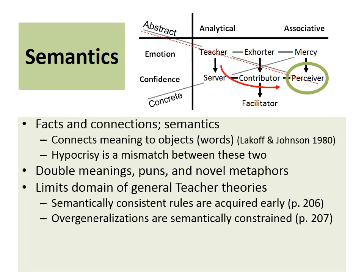Looking at grammar, Slobin said that semantically consistent rules are acquired early — rules that fit naturally and don't have hypocrisy, where there isn't a mismatch between the teacher theory. Those rules are easy for the mind to acquire. Then meaning will limit over-generalization as mentioned before. Perceiver thought is also very good at guessing the meaning of what a person is saying when they are partially through their statement — linguistically this is called implicature.